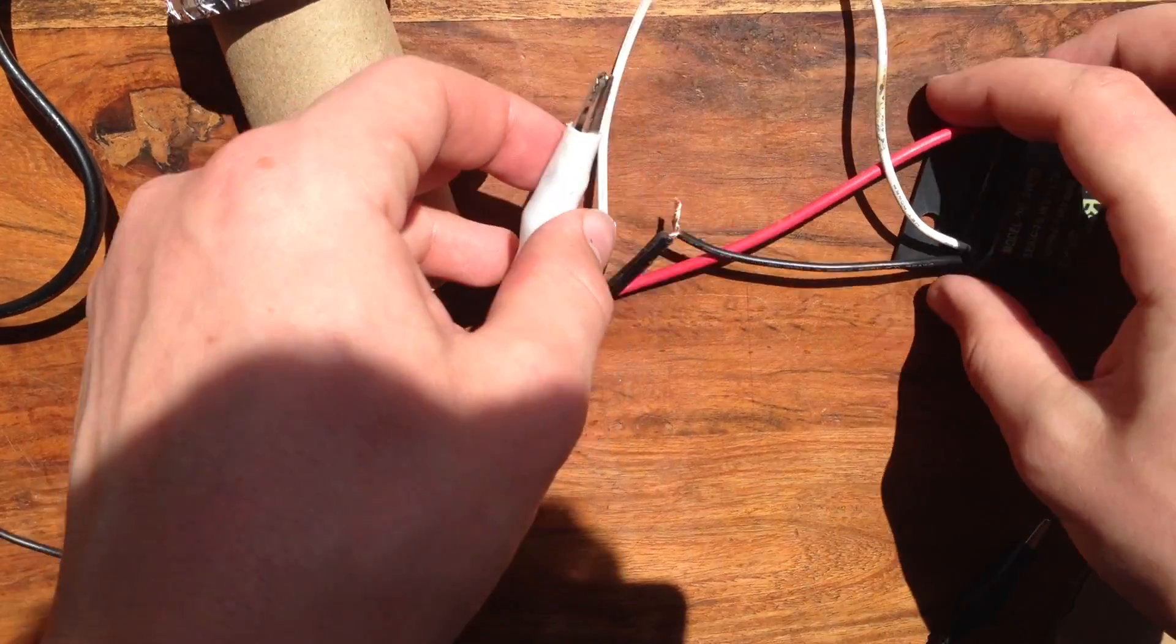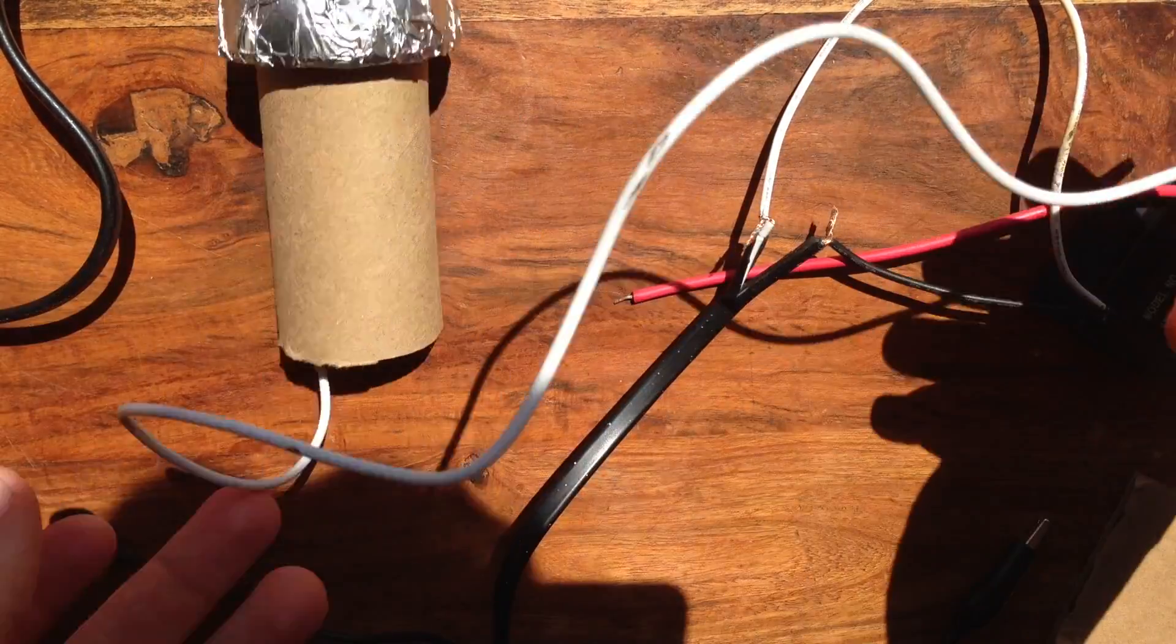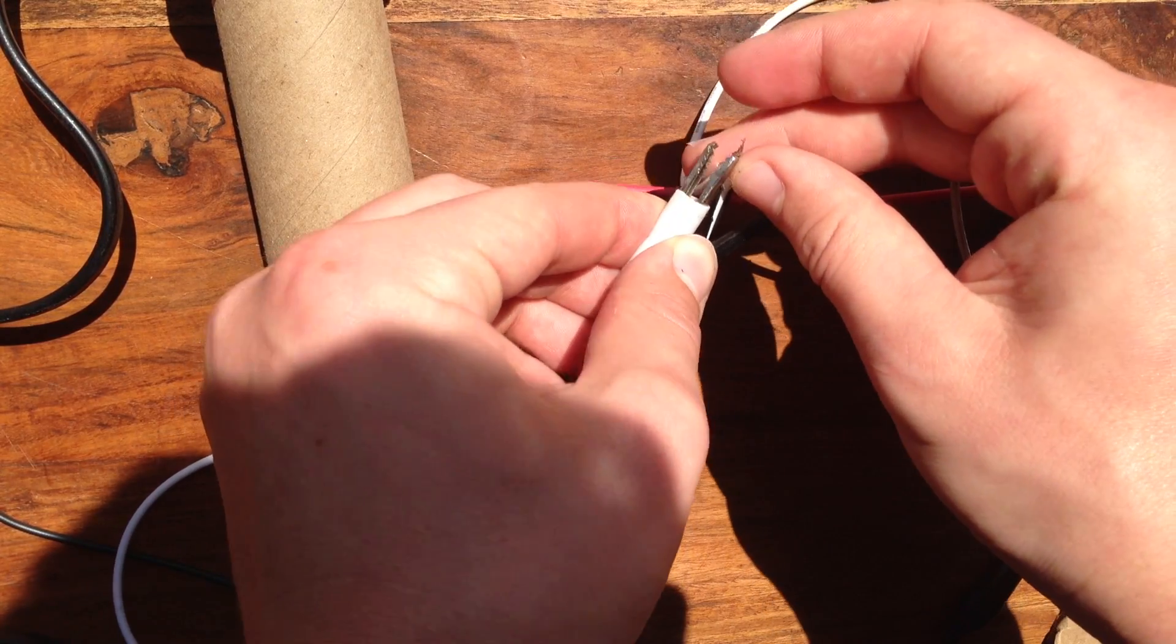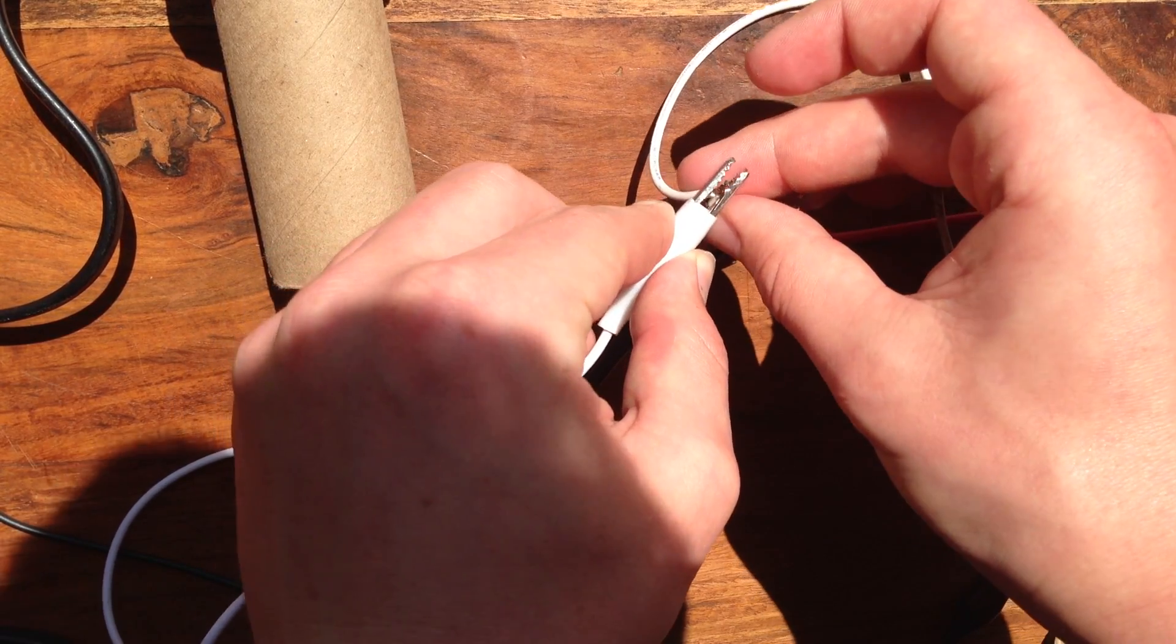Next, take one of the alligator clips coming off your toilet paper tube and connect it to one of the wires on the AC power plug. It doesn't matter which one because it's alternating current.